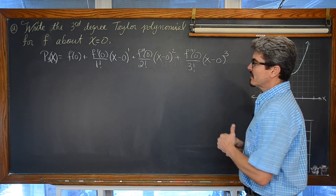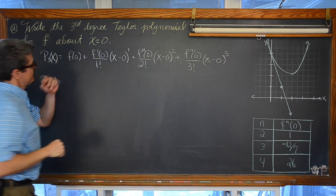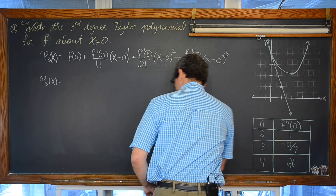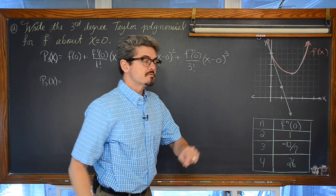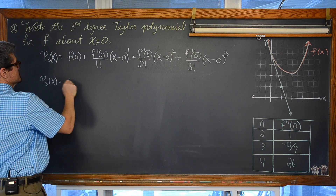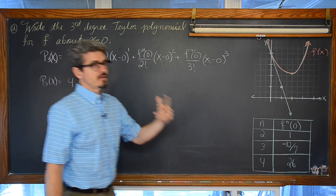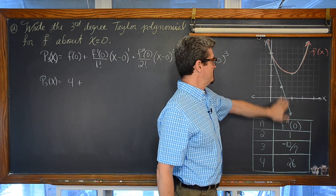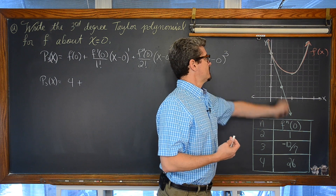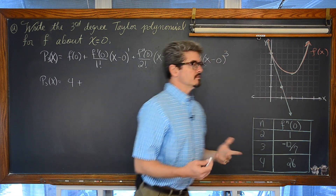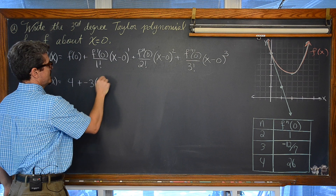So p-sub-3 of x equals f(0). Remember f at zero is equal to four. Now the value of the derivative of f at zero — the instantaneous rate of change — is given by the tangent line on the graph. We can look at the graph and say the slope is rise over run: we go down three and over one, so the slope equals negative three over one factorial times x to the first.